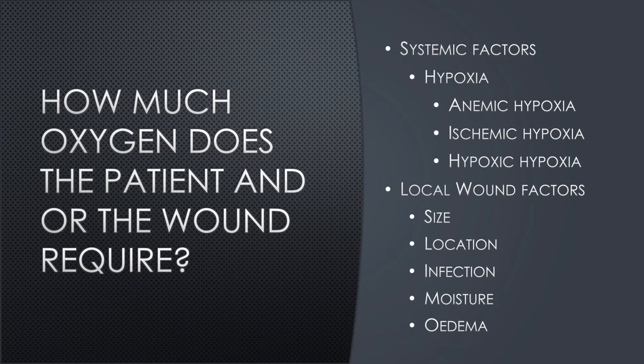Local wound factors that would increase oxygen requirements include a large wound size, a location distant from the heart, local infection, increased exudate, and edema. Many of these factors could be addressed by appropriate local wound management. Antimicrobial dressings or systemic antibiotics will control the infection; elevating the limb or applying compression bandages should control edema; and absorbent foam dressings and compression bandages should control the exudate.